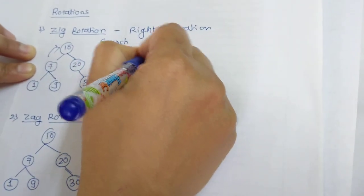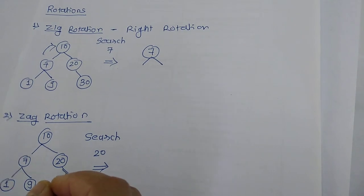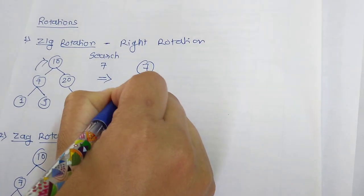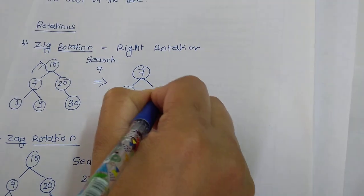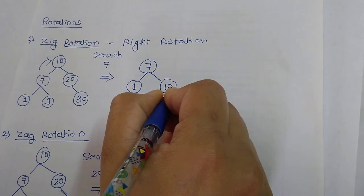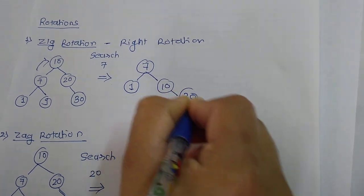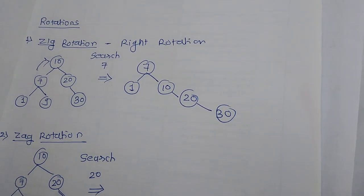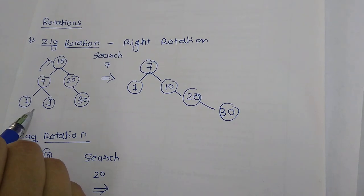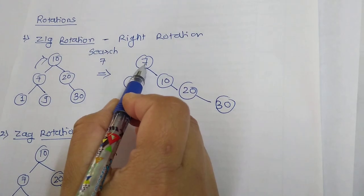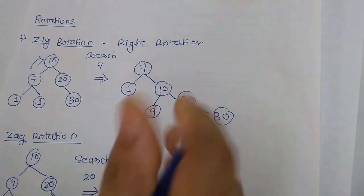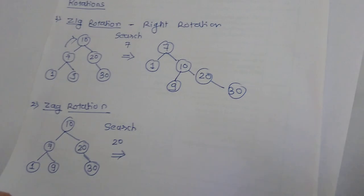So 7 is the root now. The left subtree of 7 will automatically be 1. The right of 7 is 10, because 10 goes to the right of 7. The right of 10 is 20, and the right of 20 is 30. Now finding the position of 9: 9 is to the right of 7 but the left of 10. So 9 is placed accordingly. This is the zig rotation, that is the right rotation.